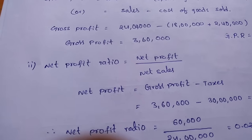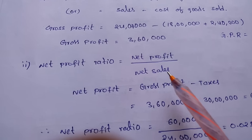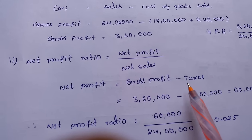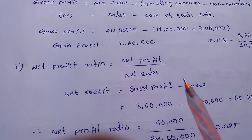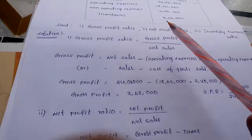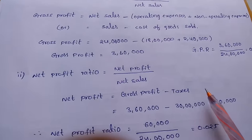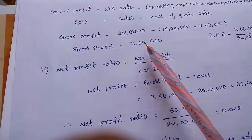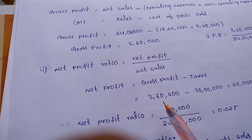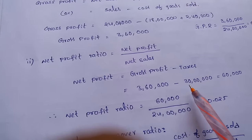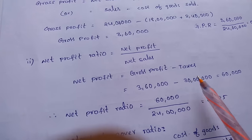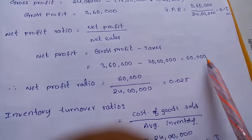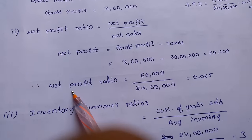Next we go for the net profit ratio. The formula is net profit divided by net sales. The net profit formula is gross profit minus taxes. In this question, taxes are not given, so we will assume taxes are 30,000. Gross profit is 3 lakhs 60,000 minus taxes of 30,000, giving us net profit of 60,000.